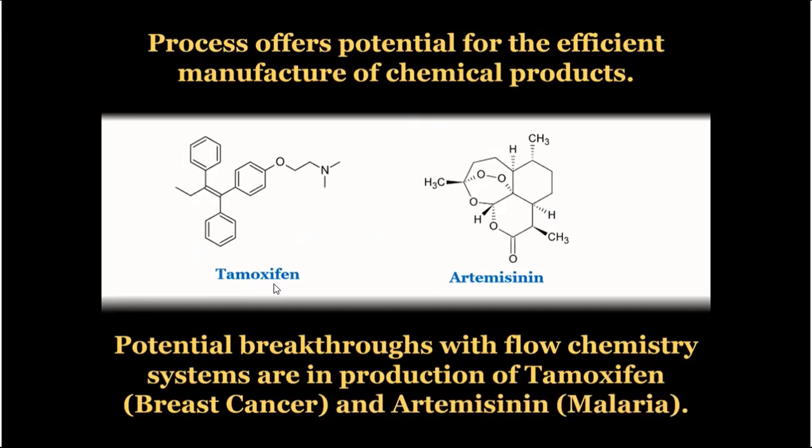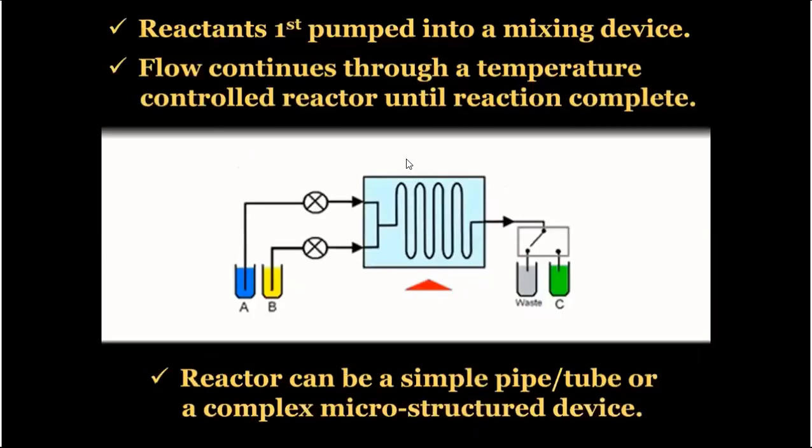Potential breakthroughs with flow chemistry systems are in production of Taxol, that is used in cancer treatment, and artemisinin in malaria. Both these products or chemical compounds are synthesized by flow chemistry. Reactants are first pumped into mixing device. Flow continues through a temperature-controlled reactor until reaction completes.